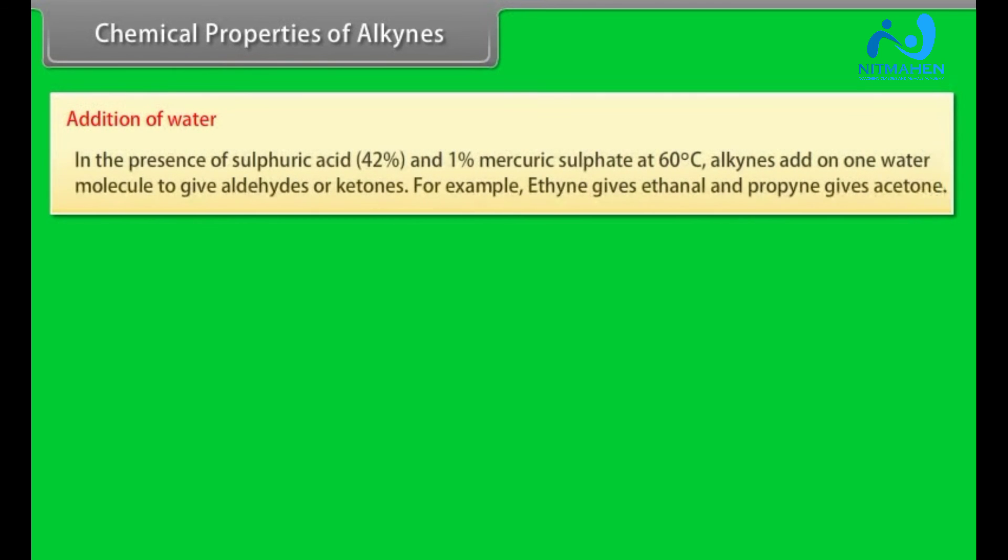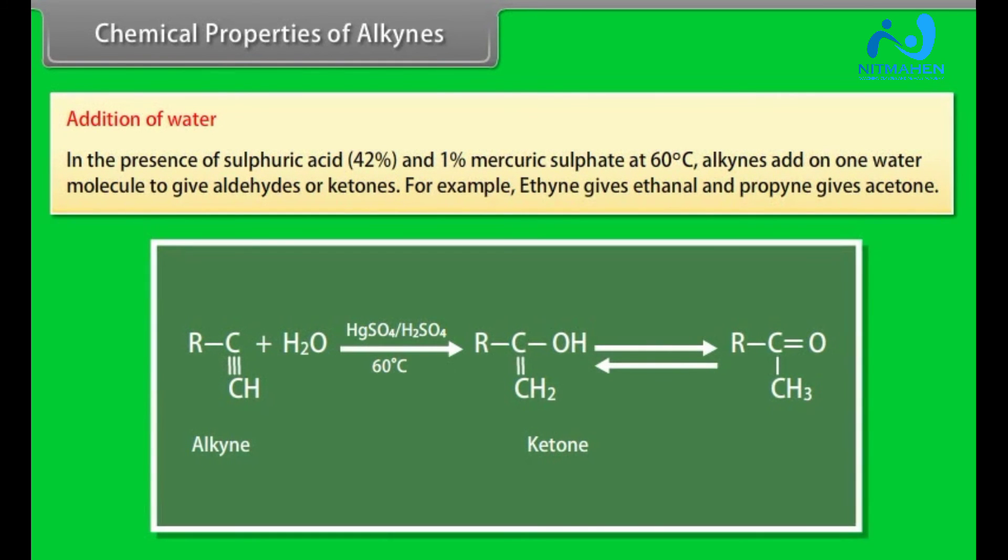Addition of water: In the presence of sulfuric acid, 42% and 1% mercuric sulfate, at 60 degrees centigrade, alkynes add on one water molecule to give aldehydes or ketones. For example, ethyne gives ethanal and propyne gives acetone.